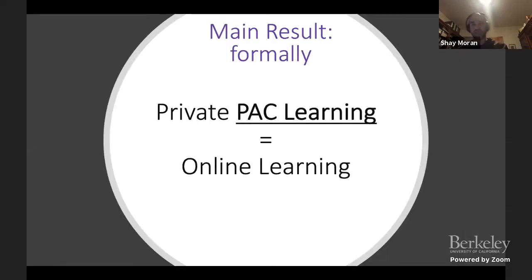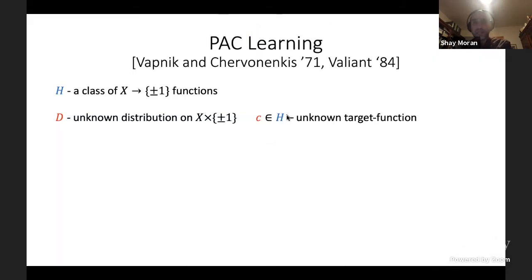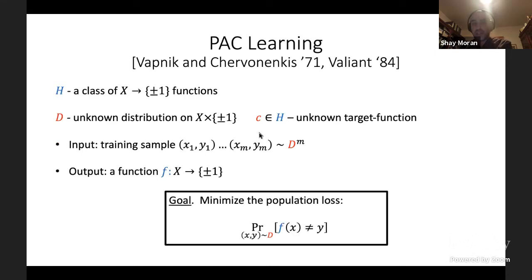Formally, what we prove is that private PAC learning is equivalent to online learning. In the PAC learning setting, we assume there is a class of Boolean functions from a domain X, an unknown distribution over examples, and the target function is a concept from the class. We get a training sample from this distribution and the goal is to output a function f close to the target concept with respect to the metric induced by the distribution.